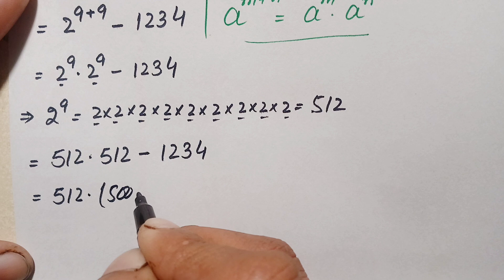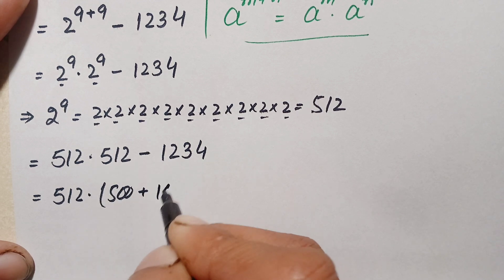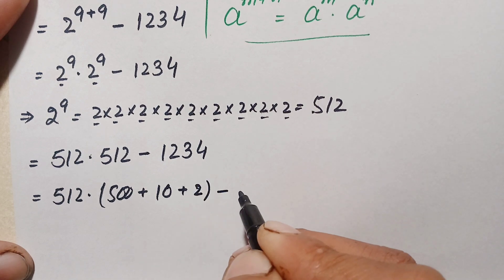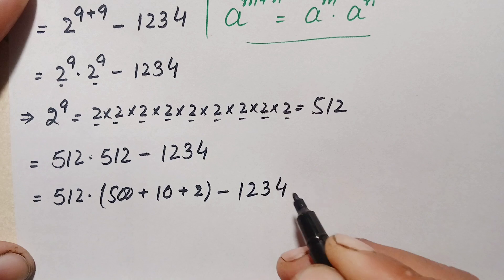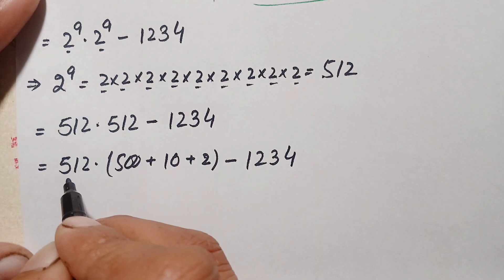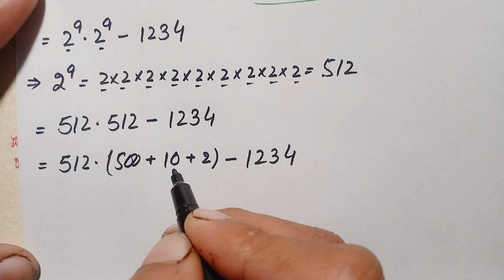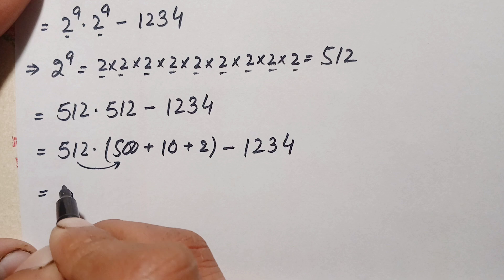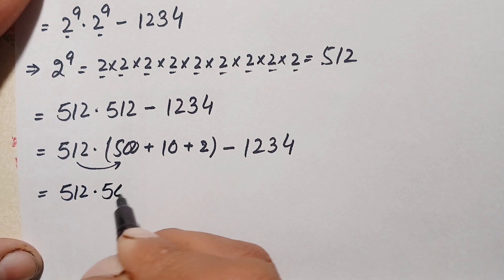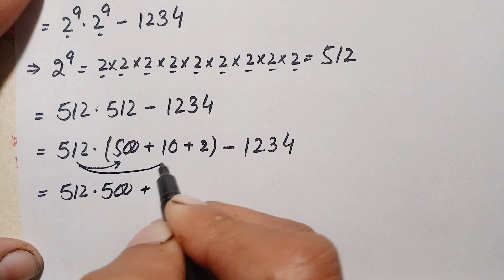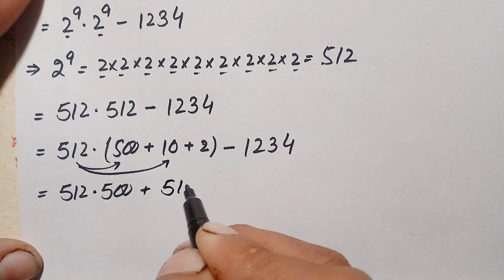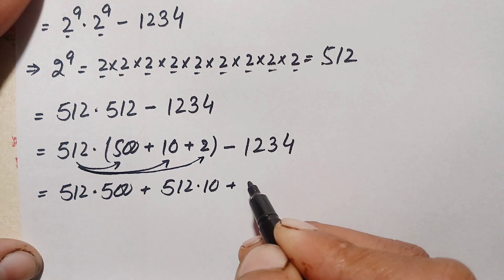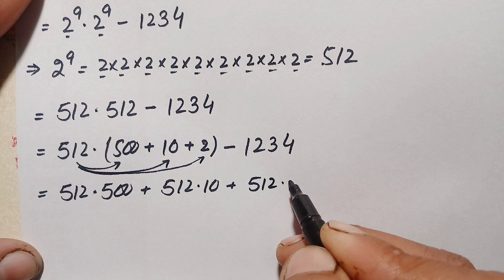The place value of the digits of 512 are: 5 has place value 500, 1 has place value 10, and 2 has place value 2, minus 1234. So we will multiply 512 with each of these place values. First, 512 times 500; plus 512 times 10; plus 512 times 2.